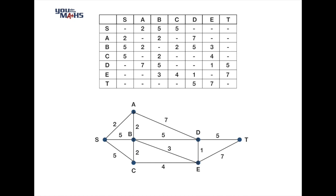We'll now use Prim's algorithm to find the minimal spanning tree, while also tracking the solution on the network diagram. We start with any vertex — we'll choose vertex A. The reason we can start with any vertex is because all vertices must ultimately be connected in the minimal spanning tree, so whichever one you choose should end up with the same solution. The first step is to choose the vertex closest to A.